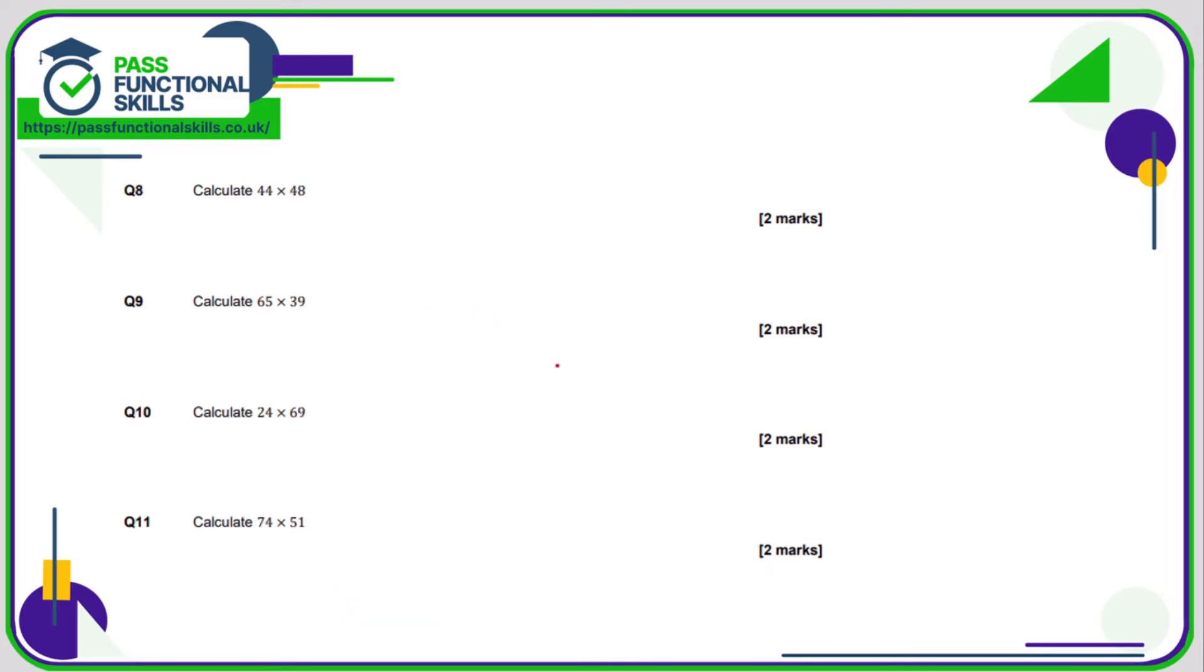Now we can use a calculator, very easy. Just type in 44, hit the multiplication symbol, 48 and you'll get the answer 2, 1, 1, 2. 65 times 39, use the same method on the calculator. Literally just type in what you see here and you get the total 2, 5, 3, 5.